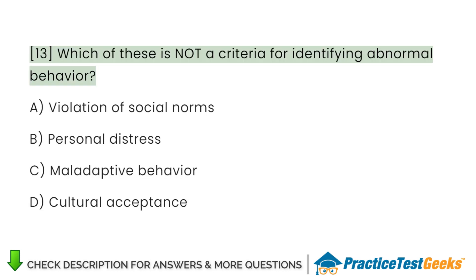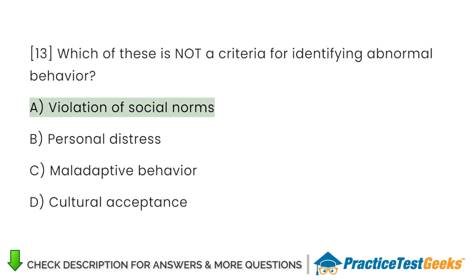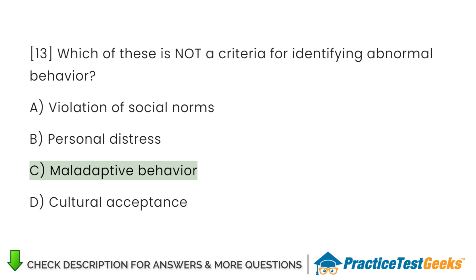Which of these is not a criteria for identifying abnormal behavior? A. Violation of social norms B. Personal distress C. Maladaptive behavior D. Cultural acceptance